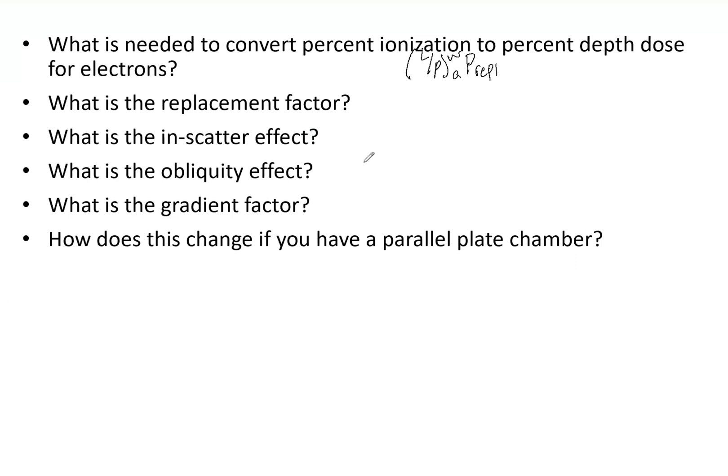Now we move to the obliquity effect. The obliquity decreases the fluence in the cavity because the electrons travel in straight lines in the air cavity instead of the oblique paths like if it were straight up air. These things are affecting the dose in different ways.